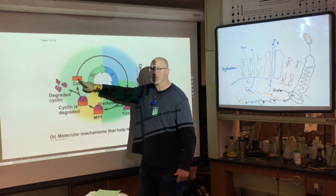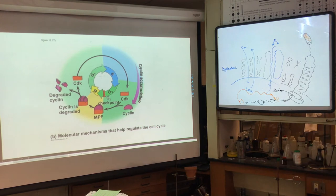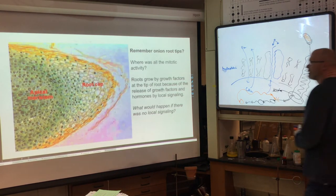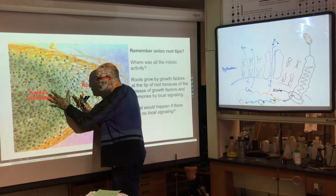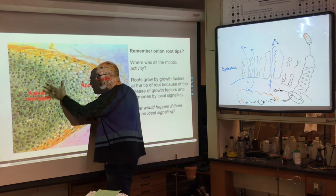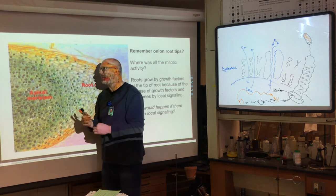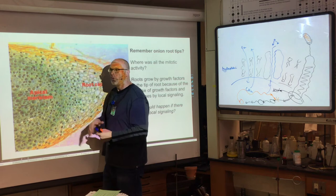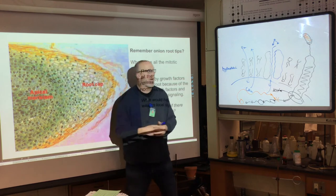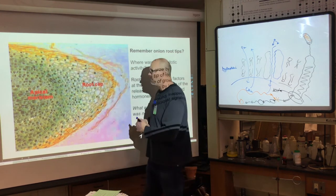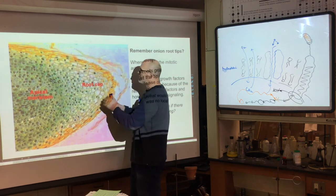Think about cancer — uncontrollable growth means the checkpoint could be constantly on when it shouldn't be. This could be caused by mutations in DNA producing too much CDK. Onion root tips are in a constant state of mitosis — these cells have to duplicate, so they send growth factors that increase CDK, it binds with the cyclin-dependent kinase to create the activated complex that catalyzes all the reactions for mitosis.